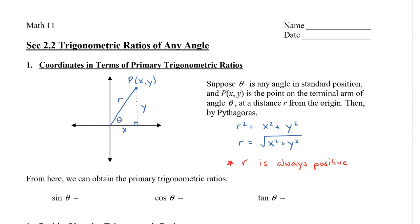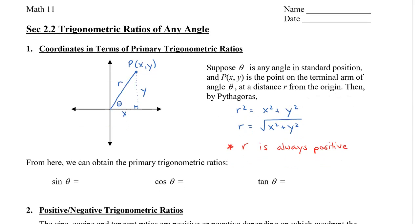From here, we can obtain the primary trigonometric ratios. Sine theta equals the opposite, which is y, divided by the hypotenuse, which is r. Cosine theta is the adjacent, which is x, divided by the hypotenuse, which is r. And then tan theta is opposite, which is y, divided by adjacent, which is x.